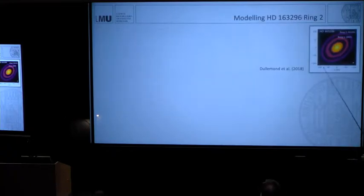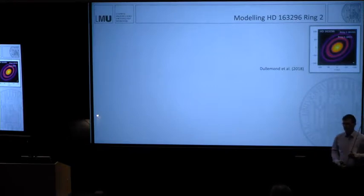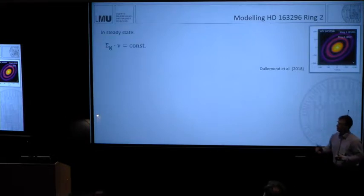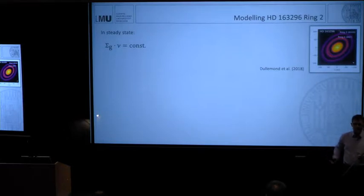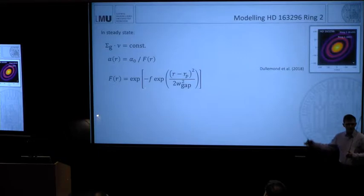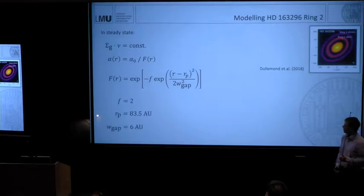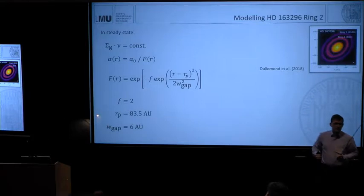The idea is we want to put this into DustPy and check what comes out of there. We want to model the second ring of HD 163296. To do that, we need to have some kind of pressure trap. We could either have a pressure maximum somewhere or we can induce a gap and then we have in the outer edge of the gap, we have also a pressure trap. But we do not want to fix the gas because we also want to evolve the gas. In steady state, the surface density times viscosity is a constant. So if you want to have a gap in gas, we have to increase the viscosity.